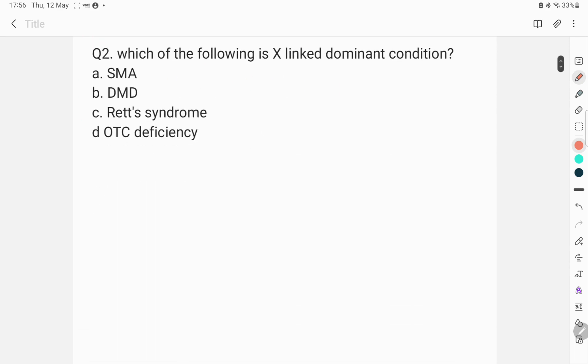The next question was which of the following is an X-linked dominant condition? The options were SMA, DMD that is Duchenne muscular dystrophy, Rett syndrome and OTC deficiency. The answer to this question is clear cut Rett syndrome. There are very few X-linked dominant conditions that are seen. So Rett syndrome is one of these.